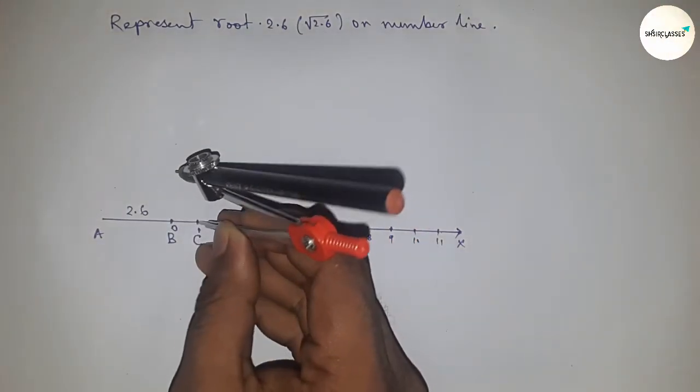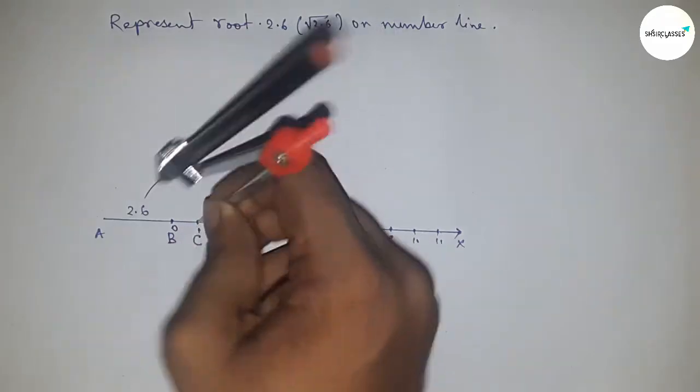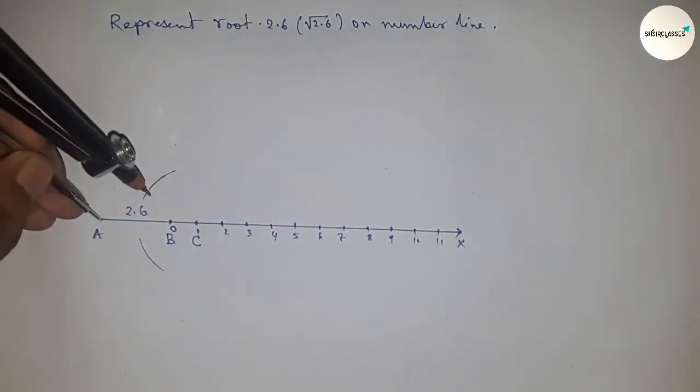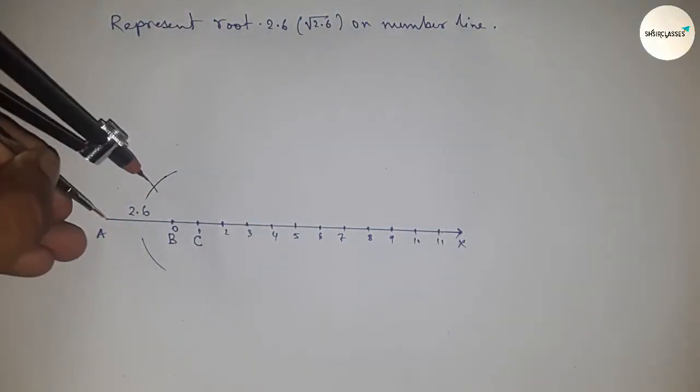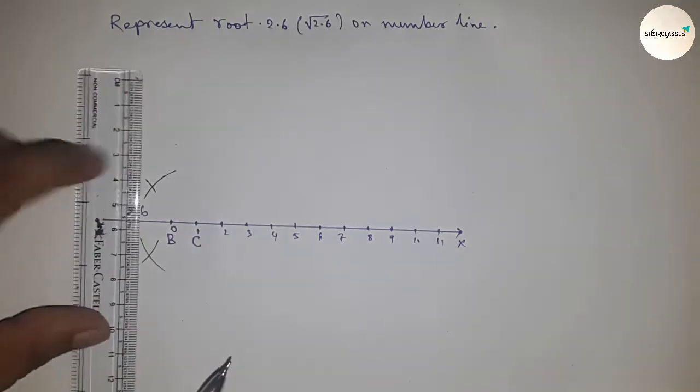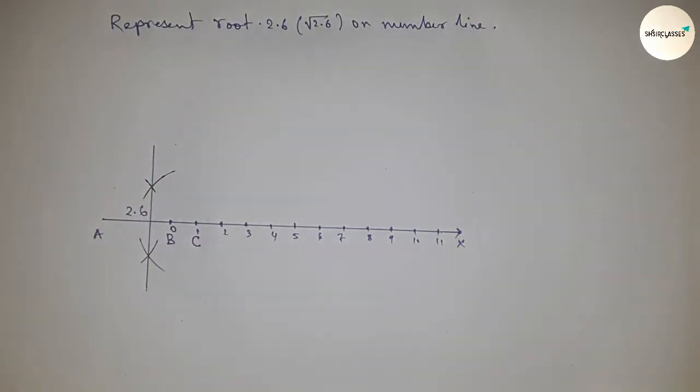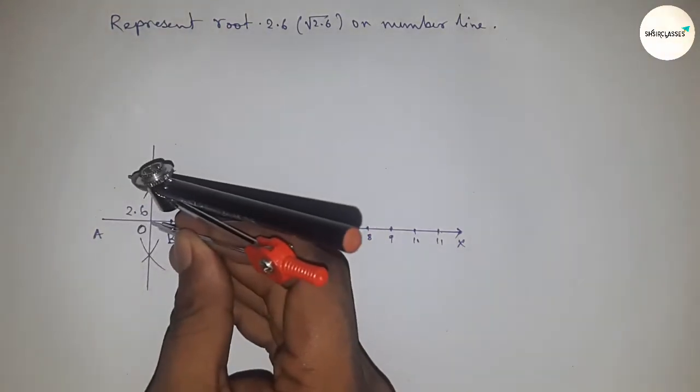Next we have to bisect the line AC. So taking greater than half of AC and drawing an arc with the same length and cut the arcs by this way. Next, joining this and which meets at a point O.